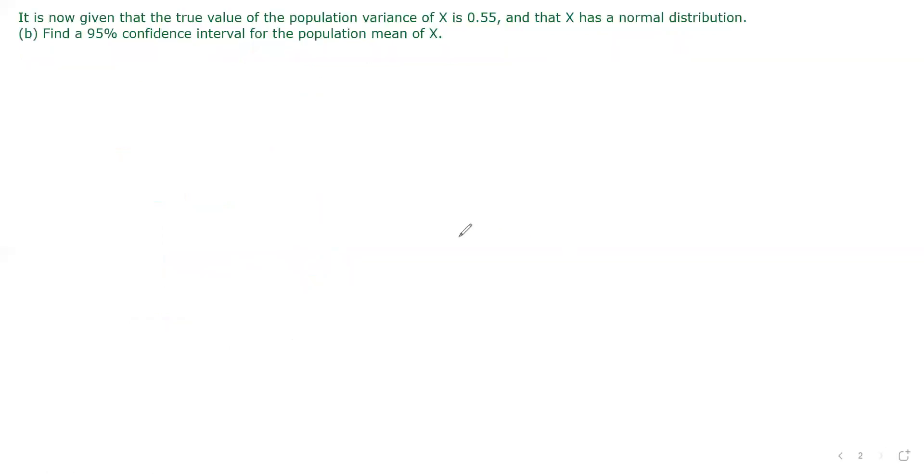Part B, it is now given that the true value of the population variance of x is 0.55. The true value of the population variance, so sigma squared, is 0.55. And x has a normal distribution, so we know that x follows a normal distribution. Mean is unknown, but the variance is 0.55.